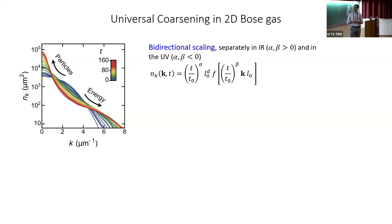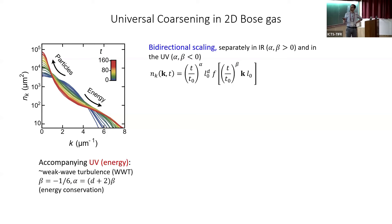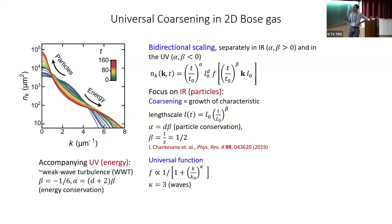Our experimental data shows time color-coded: the blue line is the initial state. We see exactly what was expected theoretically — particles go one way and energy goes another. Focusing on the energy (UV) part, this is essentially free turbulence, so one expects exponents from weak wave turbulence: β = −1/2 and α = 4β from energy conservation. For the IR part, theoretical predictions from non-equilibrium field theories give β = 1/z where z is the critical dynamic exponent, and α = d·β from particle conservation, since this transfer is purely particle-conserving.